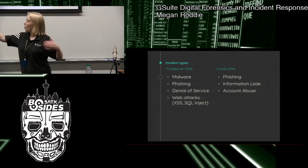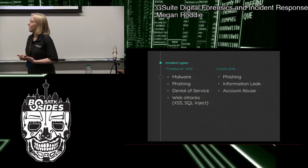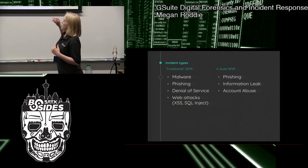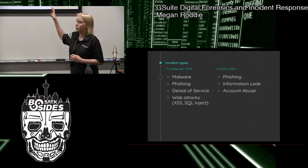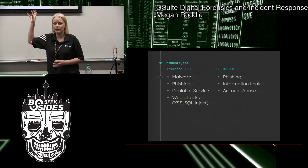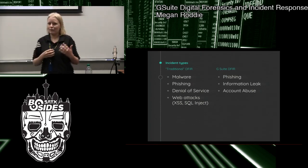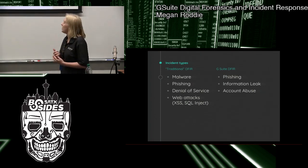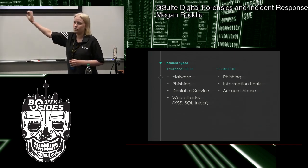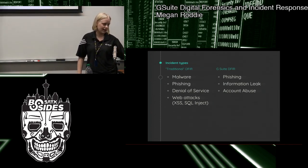In traditional DFIR there's a whole range of different incidents: malware, phishing, denial-of-service, web attacks, and more. The incidents really focusing on in G Suite are related to mail and file storage — phishing, potential leak of information, and potential account abuse. Those do fall under traditional DFIR too, but that's the focus of what you're going to see in G Suite.